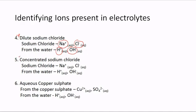In concentrated sodium chloride, it is no different — we have sodium ions and chloride ions, and again H+ and OH- ions from water. In the case of aqueous copper(II) sulfate, we have Cu2+ copper ions and SO4(2-) sulfate ions, and again from the water we have H+ and OH-. You have to be able to identify the ions present in a particular electrolyte.